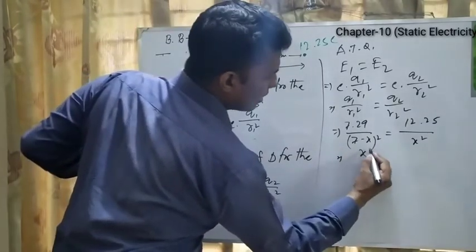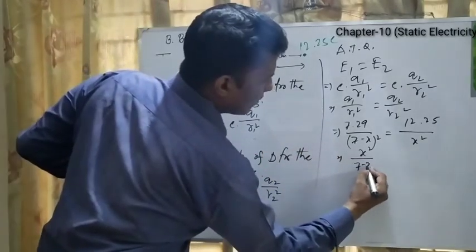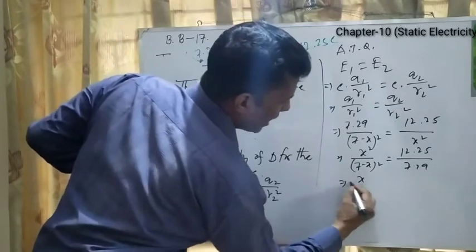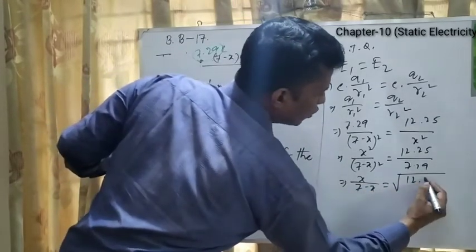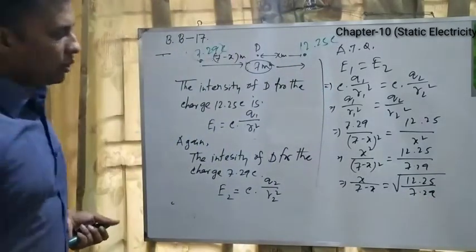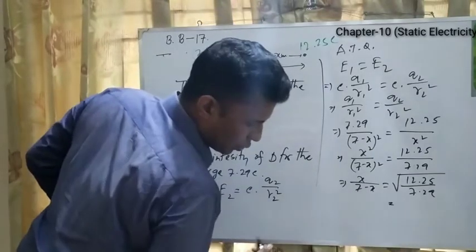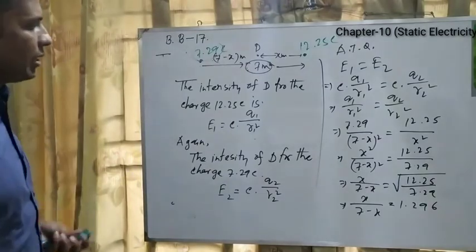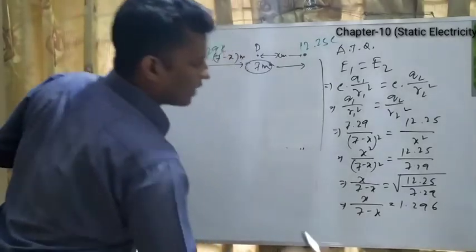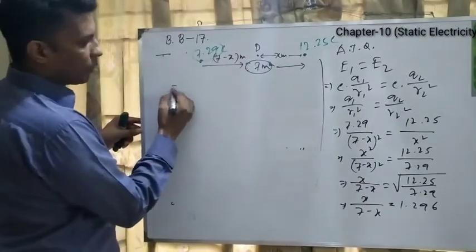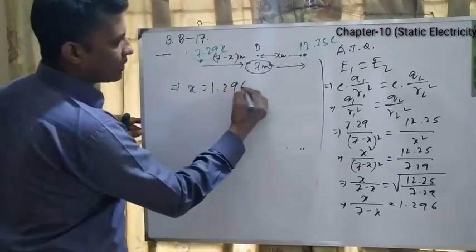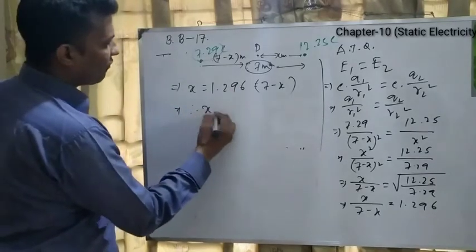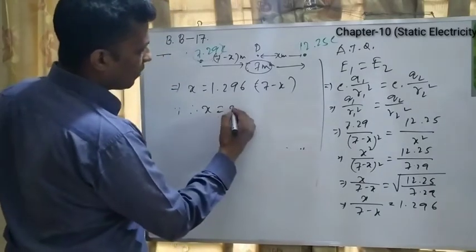By cross multiplication: X² / (7 − X)² = 12.25 / 7.29. Taking the square root of both sides: X / (7 − X) = √(12.25 / 7.29) = 1.296. Solving this equation gives X = 3.95 meters.